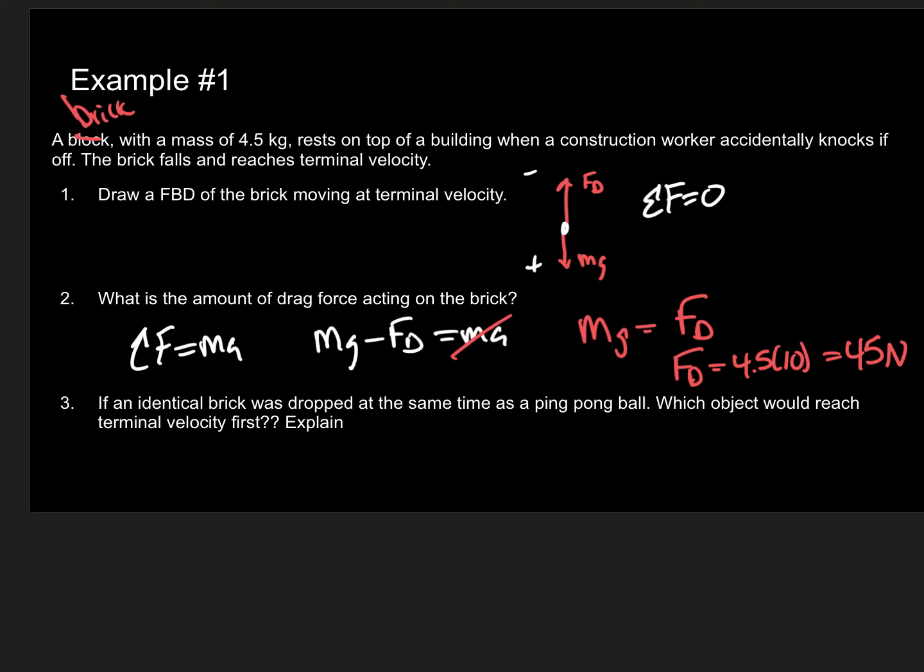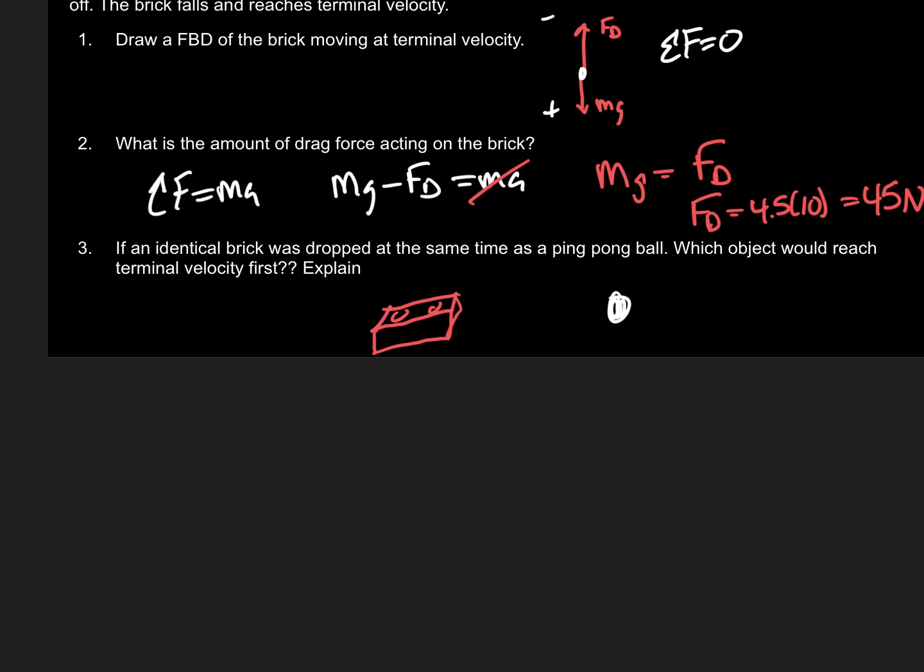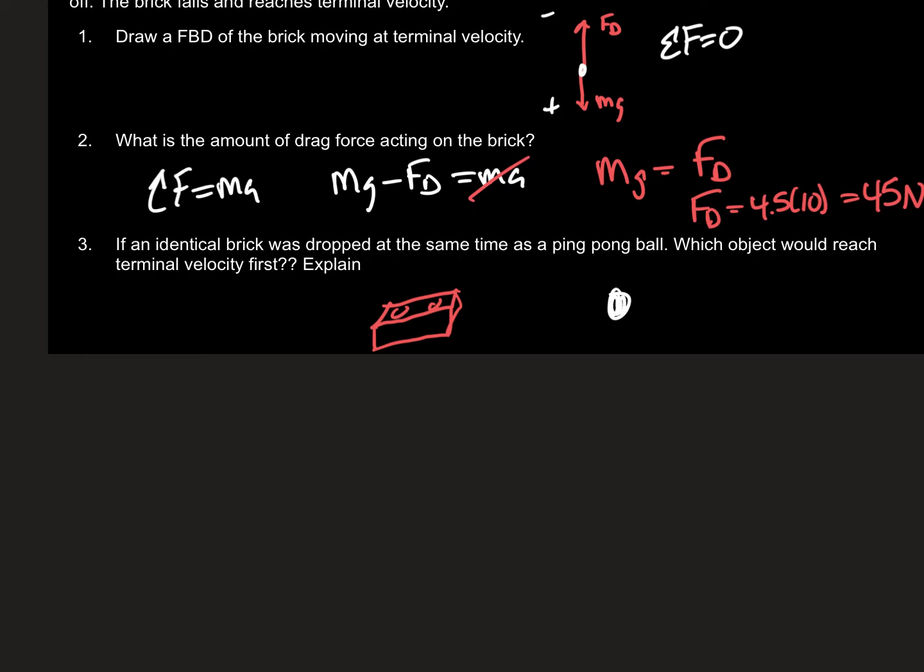If an identical brick was dropped at the exact same time as a ping pong ball. So now you have a brick. So now the construction worker is starting to think here. So now he's dropping a brick and then a ping pong ball. Which object would reach terminal velocity first? Explain why. Well, the perfect example would be, obviously we know it would be the ping pong ball. Because we know the force of drag is proportional to velocity squared.